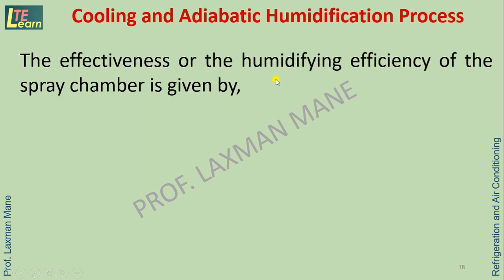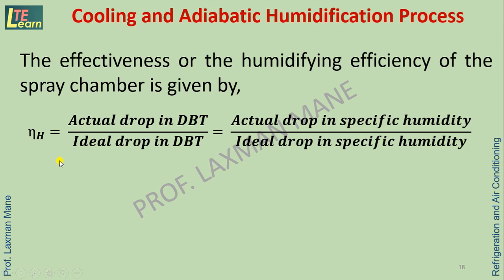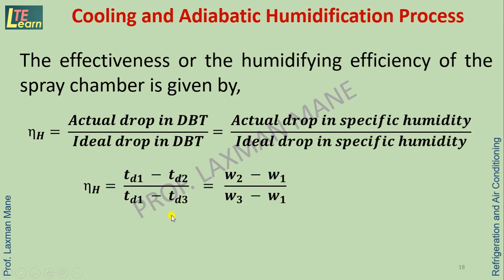The effectiveness or humidifying efficiency of the spray chamber or air washer is given by the formula: humidifier efficiency equals the ratio of actual drop in dry bulb temperature to ideal drop in dry bulb temperature, or equivalently the ratio of actual drop in specific humidity to ideal drop in specific humidity — that is, (W1 − W2) / (W1 − W3), where W1 and W2 are specific humidity at inlet and outlet of air, and W3 is the ideal outlet specific humidity.